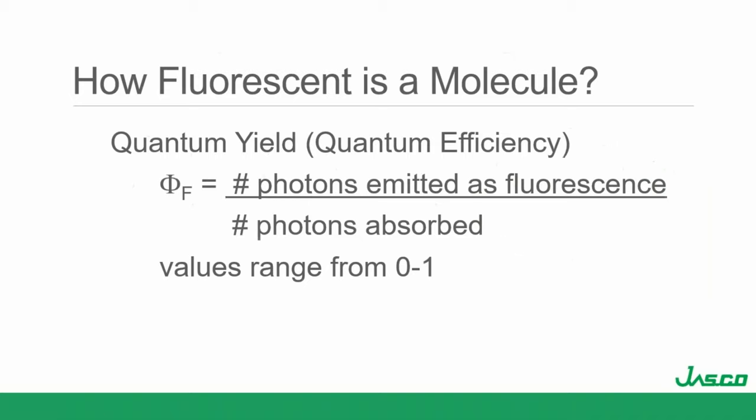How do we determine how well a molecule fluoresces? We can quantitate that — it's called the quantum yield or quantum efficiency. We look at the number of photons emitted as fluorescence ratioed to the number of photons absorbed by the molecule, giving a value in the range of zero to one. Numbers approaching one are going to be great fluorophores — so if it's 0.9 and we have 100 photons absorbed, we'll have 90 photons emitted as fluorescence. We ideally want to choose probes with high quantum efficiencies, and probe designers really work to achieve that.